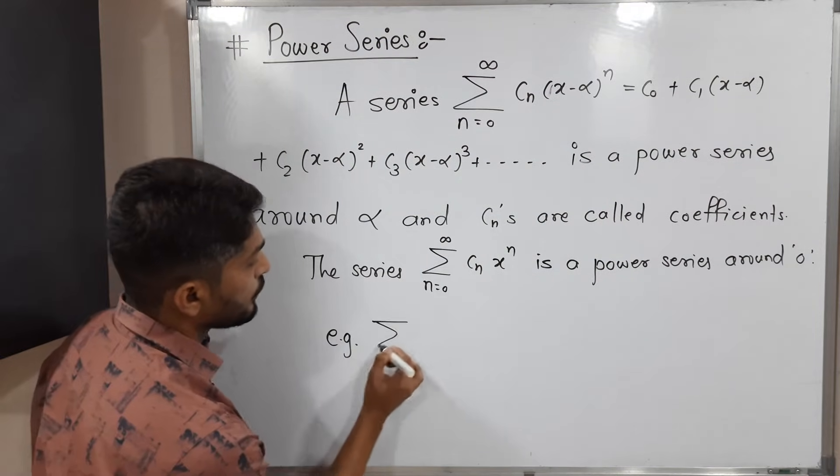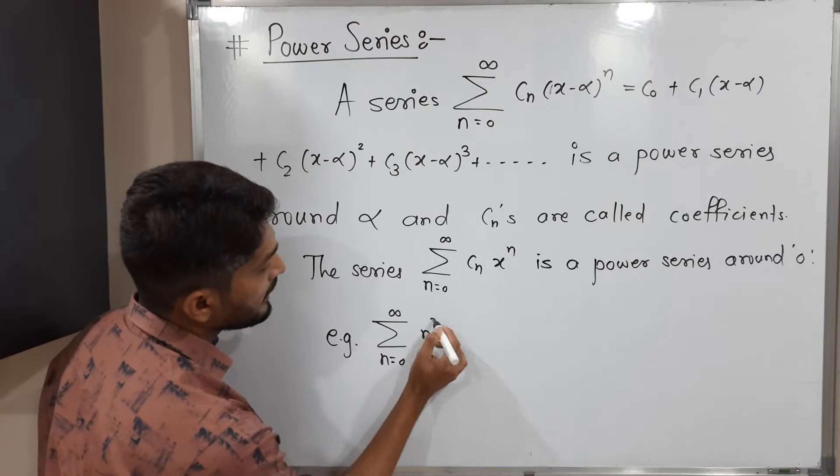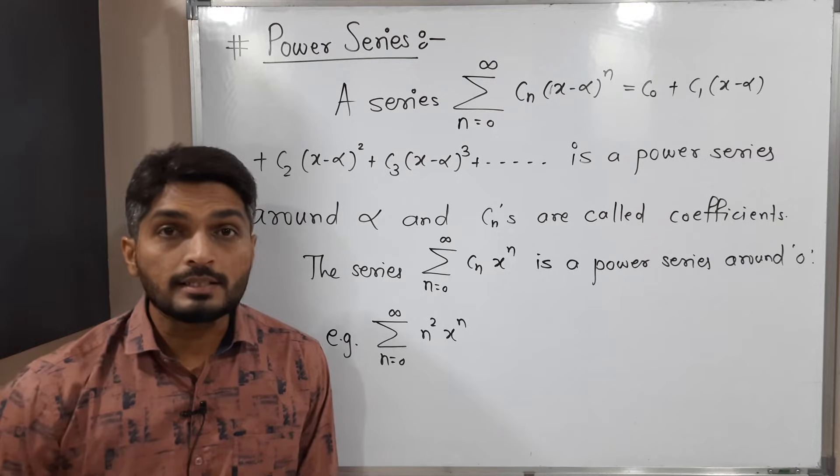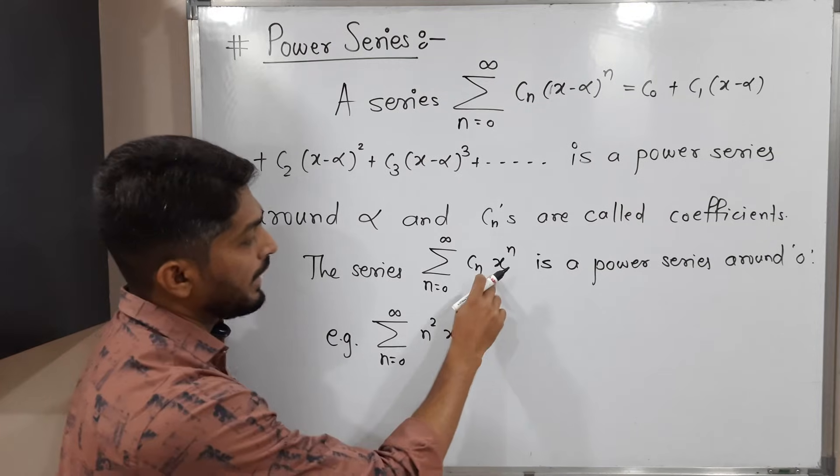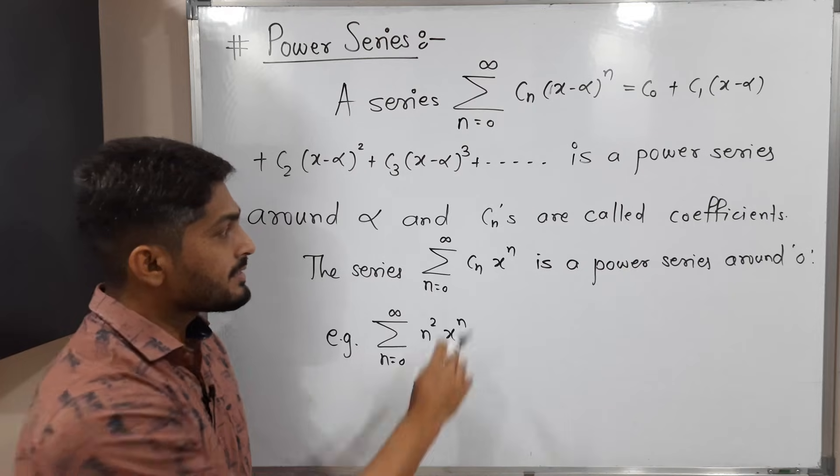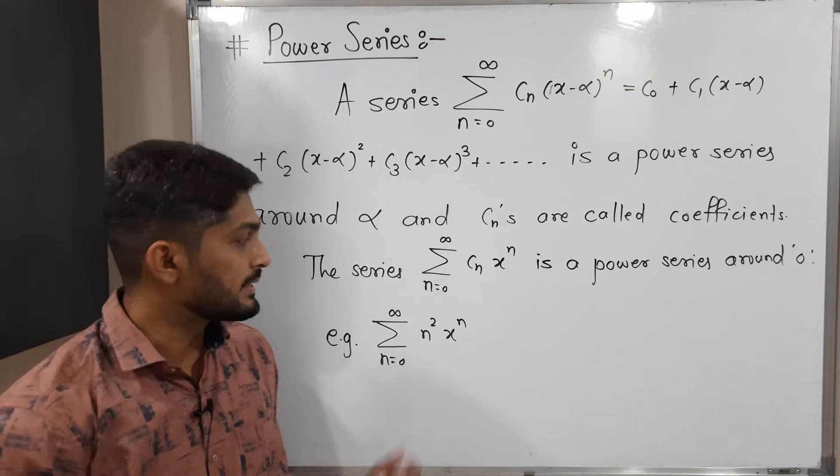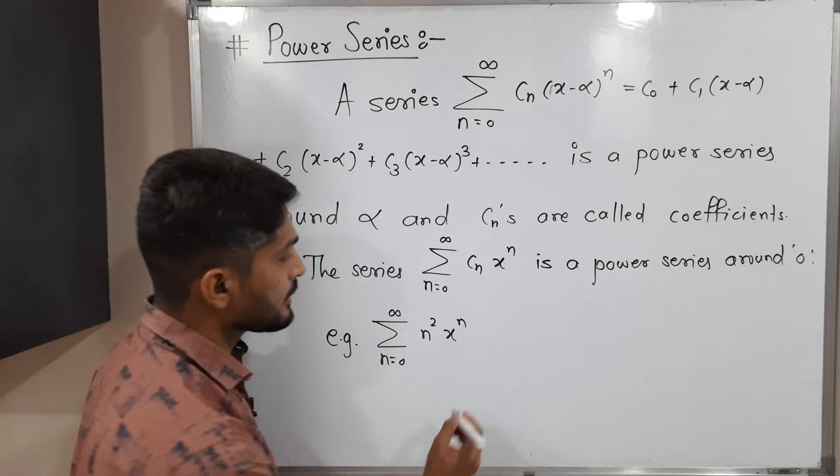Summation, n running from 0 to infinity, n square x raised to n. You can easily see this is a power series around 0, since we have that series in this form. And cn equals n square, so this is a power series with coefficient cn equals n square. Let's discuss one more example.